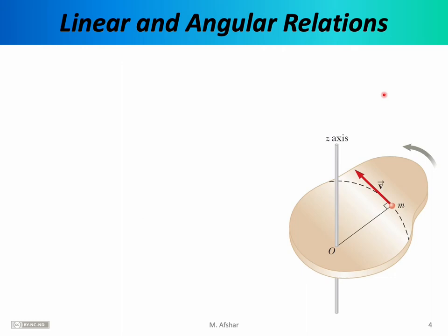Looking at the linear and angular kinematic equations side by side suggests there are intimate connections between the linear motion variables and the angular motion variables. To understand those connections, let's consider the rotational motion of an object of arbitrary shape rotating around some arbitrary point O. Point O does not have to be the center of mass. As the object rotates around point O, the axis of rotation lies along the z-axis. We focus on a specific point — a single atom of mass m on the object. As the object rotates, that atom executes circular motion, tracing a circle centered at point O.